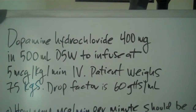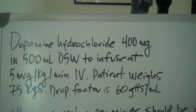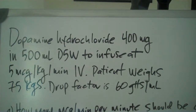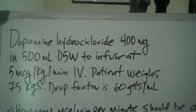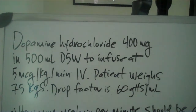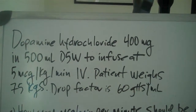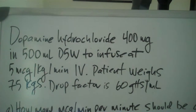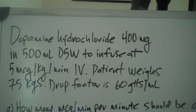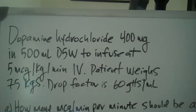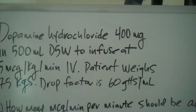Hi and welcome to MedMap for Nurses. Let's see what we got here. Dopamine hydrochloride 400 milligrams in 500 milliliters of 5% dextrose in water, to infuse at 5 micrograms per kilogram per minute IV. The patient's weight is 75 kilos. The drop factor is 60 drops per mL.